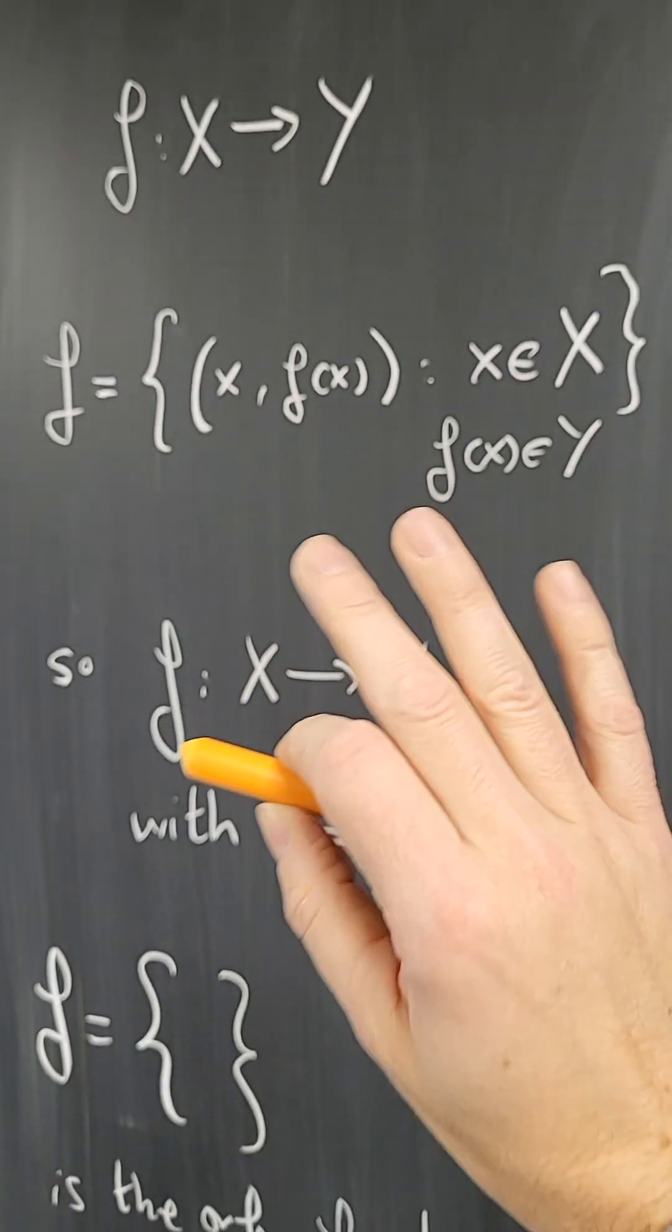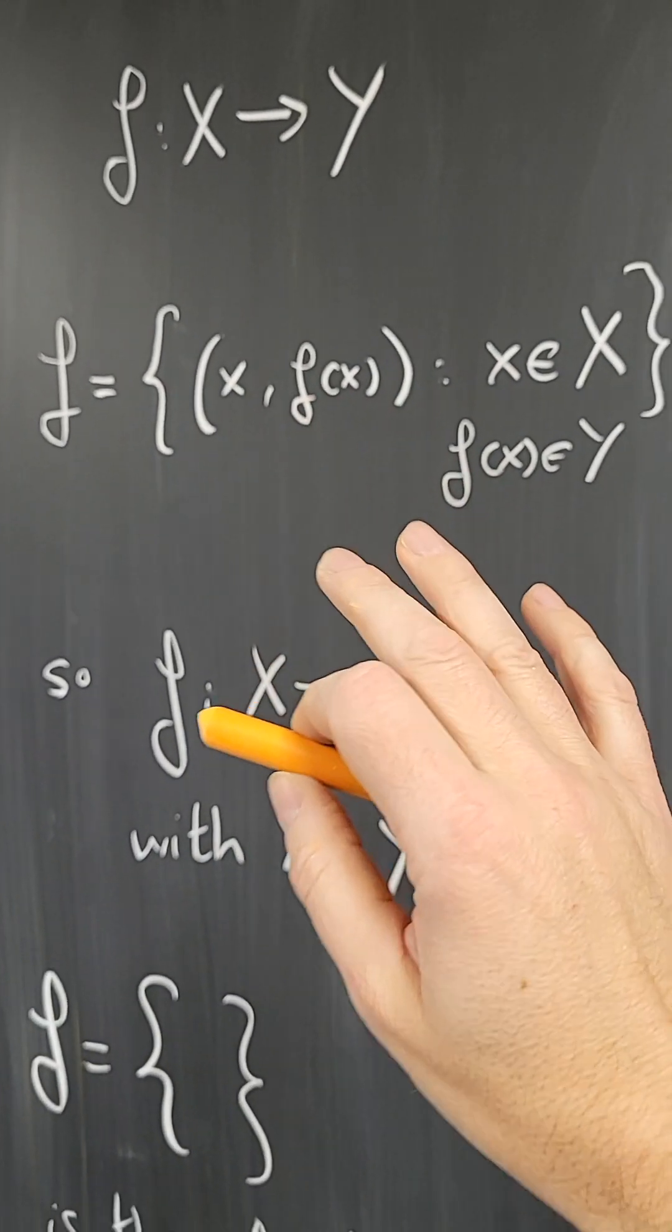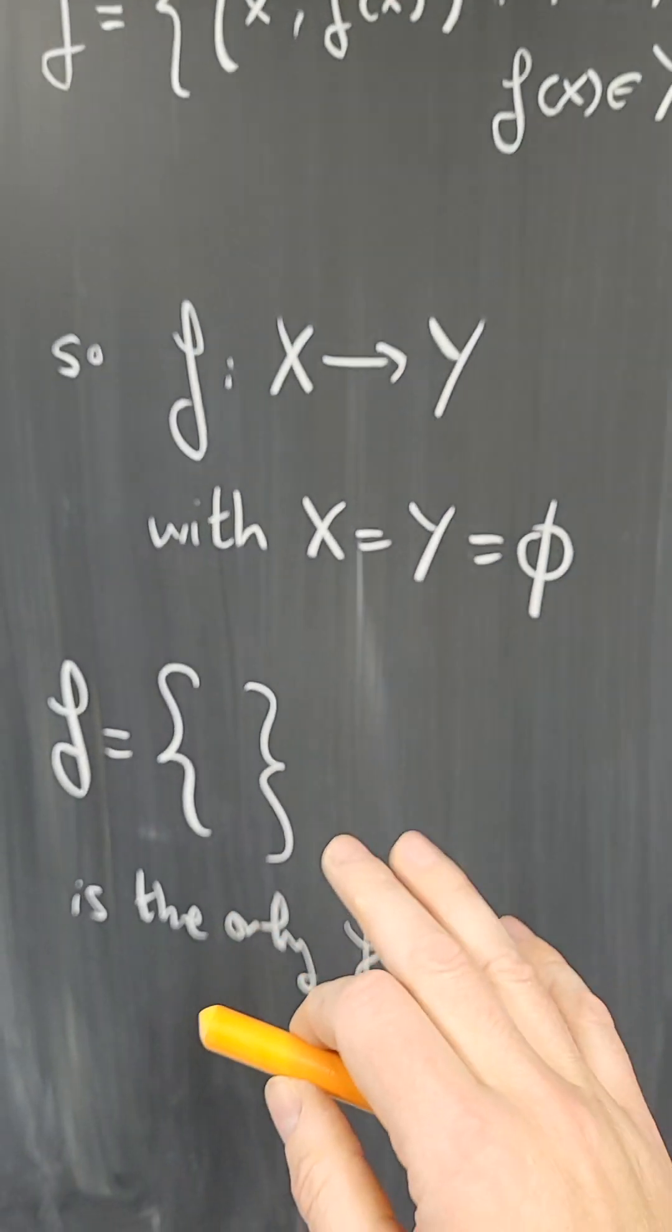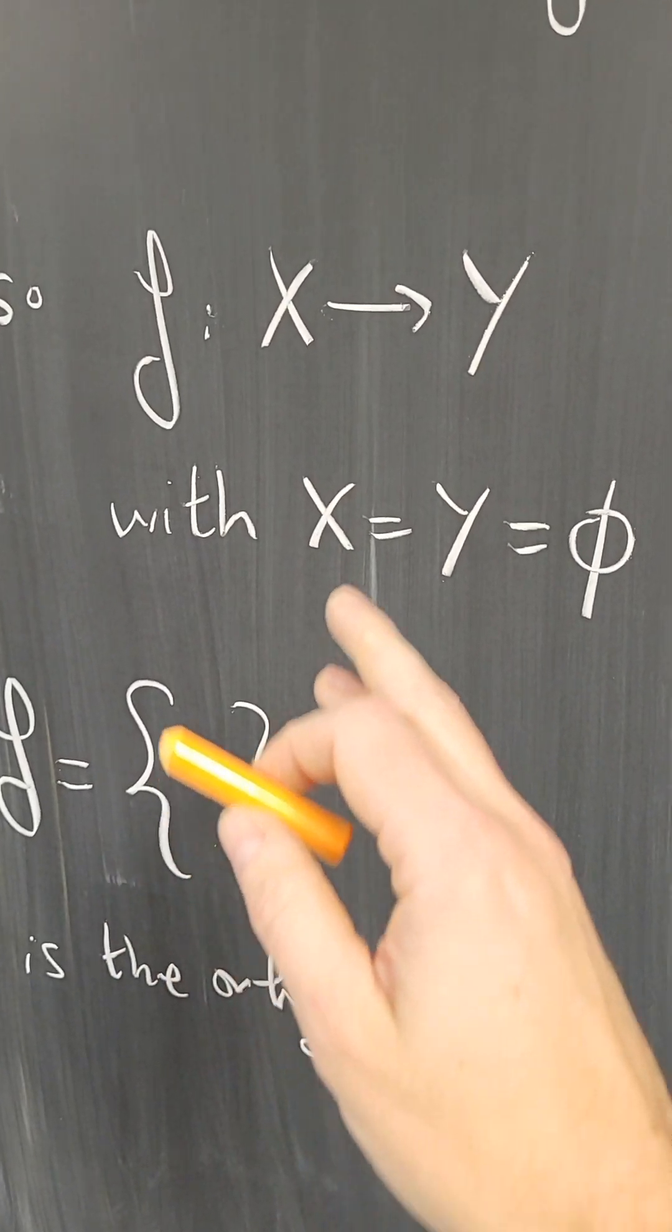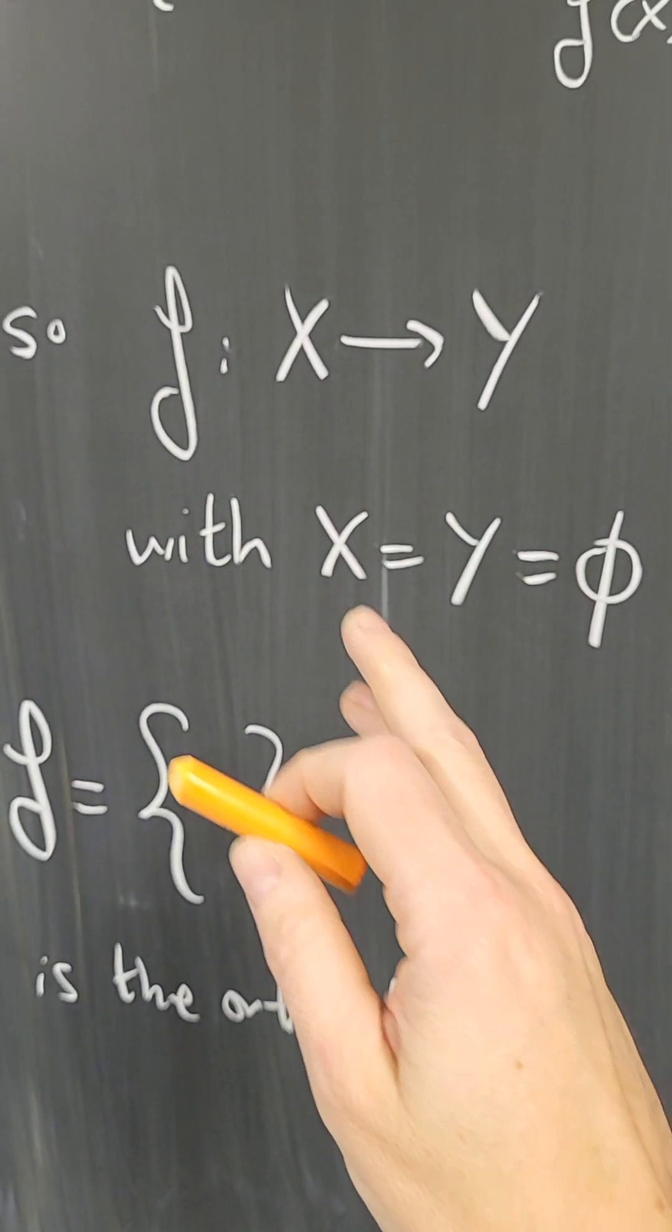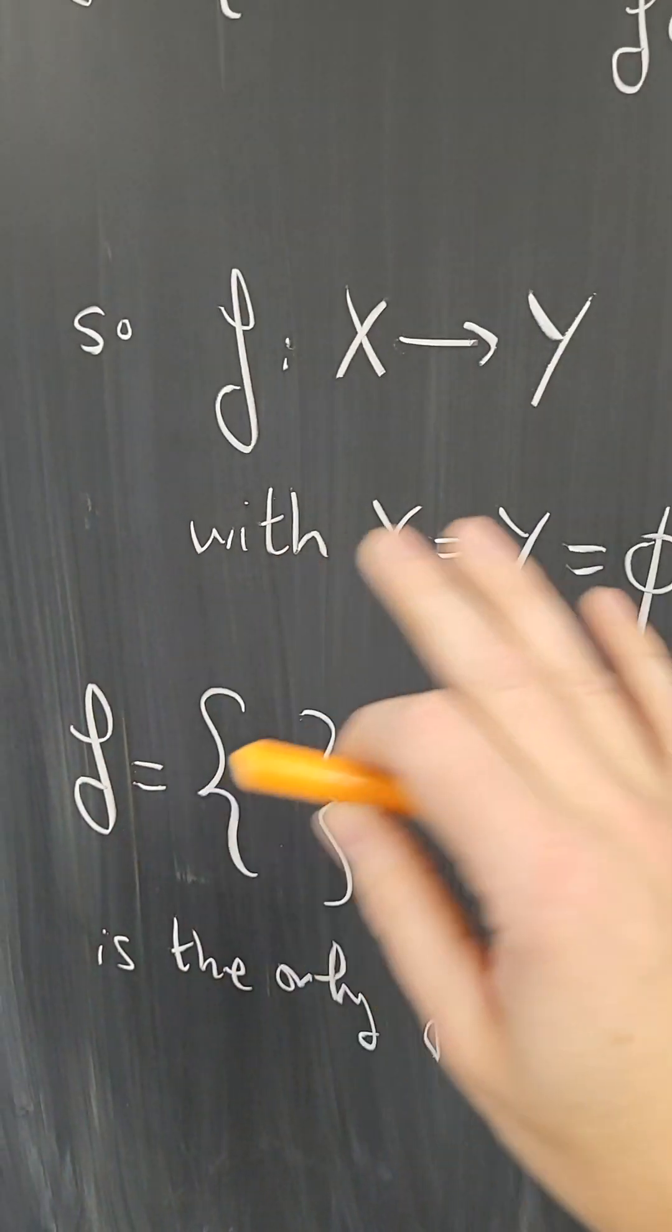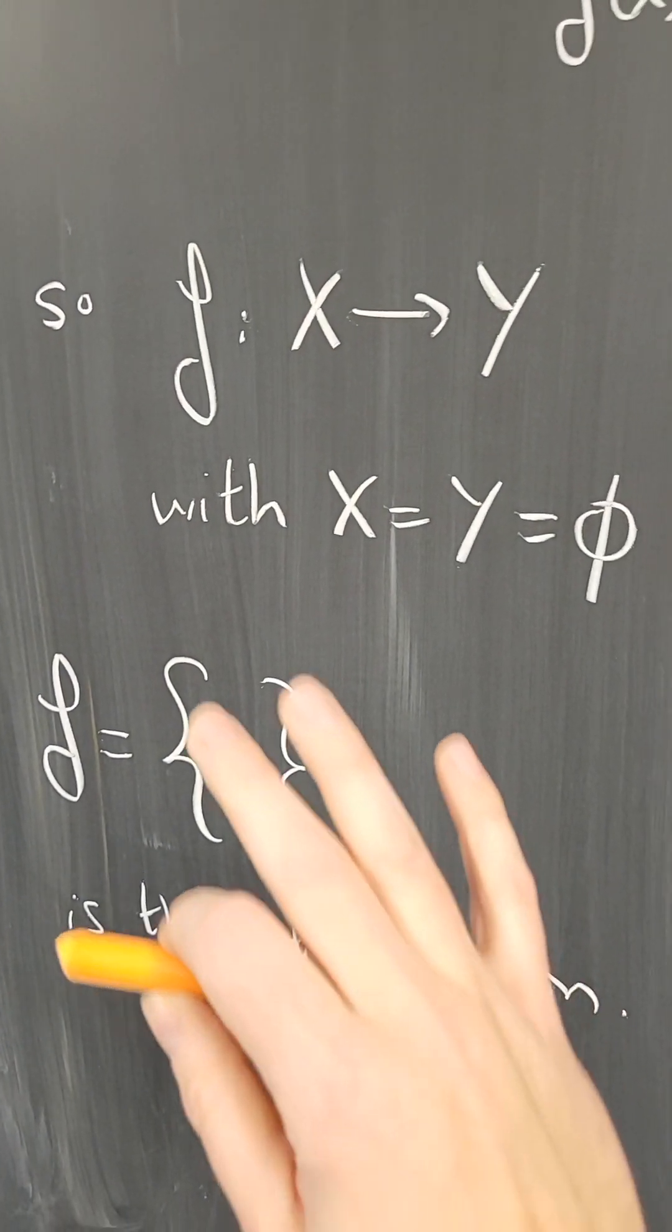And to me, just to me, this definition of function makes no sense. Because if we consider this a function, this function is defined by no rule. Since there are no elements, I don't have to say what the rule was ever.